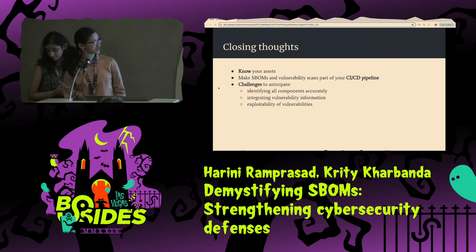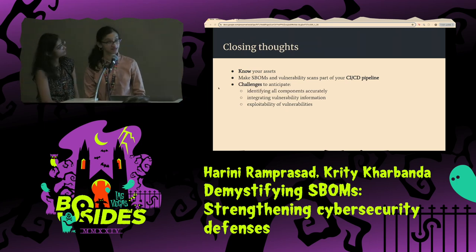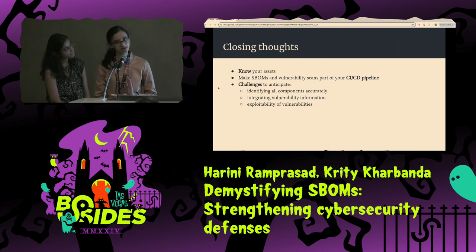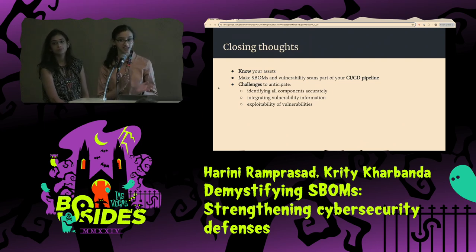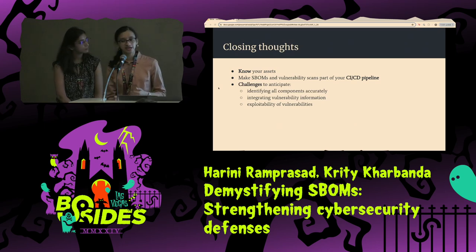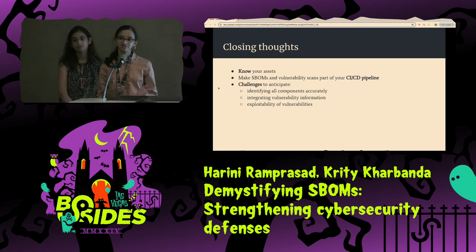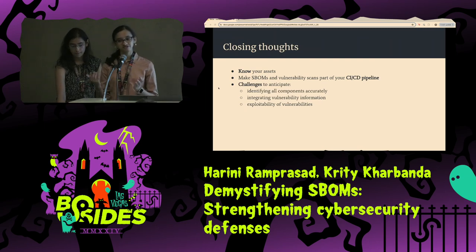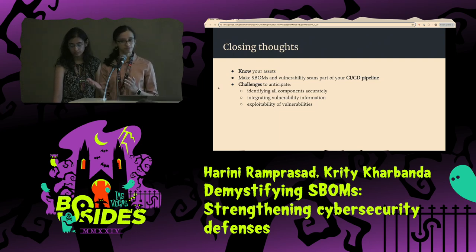To summarize, we saw how SBOMs can be really helpful to know your assets better and understand your software's components. We saw how making SBOMs and vulnerability scans part of your CI/CD pipeline can really help shift security left. But it's not going to be an easy ride — there are some challenges. Firstly, identifying all components accurately could be a big challenge. If you run different SBOM tools they may give you different results, depending on how that tool works. A tool may just look at manifest files, but that may not give an accurate picture of whether the library was actually used in code. You may have to try out different tools to see what fits your software profile best.